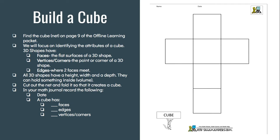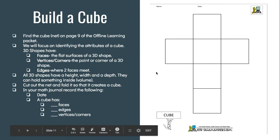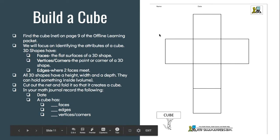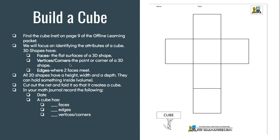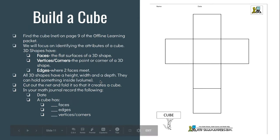After that, this is really fun — you're going to build a cube! In your offline learning packet there is a paper that looks like this. If you don't have your packet, you can draw this outline on any piece of paper. You're going to learn about the attributes of a cube: the faces, which are the flat surfaces on a 3D shape; the vertices or corners, which are the points; and the edges, where two faces meet. All 3D shapes have a height, width, and depth. They can hold something inside, which is volume.